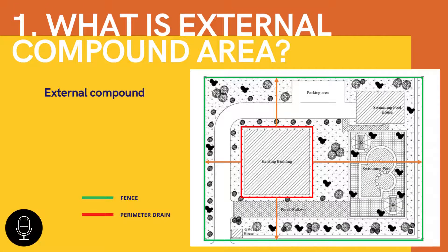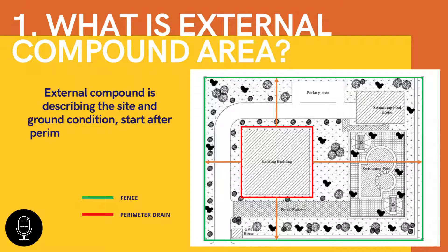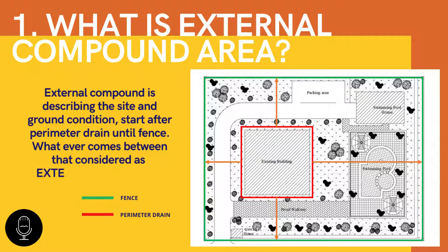Do you know what an external compound area is? The external area describes all items outside the building but inside the site boundary. Exterior property means the open space on the premises and surrounding area. The adjoining property and accessory structure is under the control of the owner of such premises. As you can see here, the external compound describes the site and ground condition — starting after the perimeter drain until the fence. Whatever comes between that is considered as the external compound.